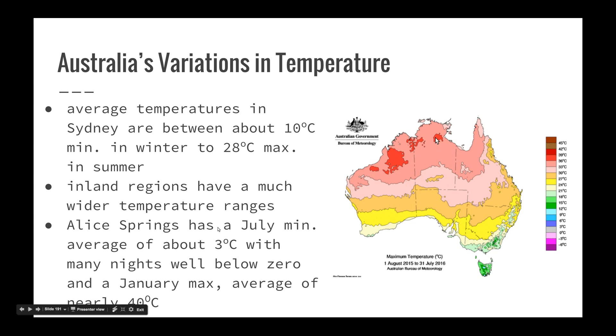In particular, Alice Springs and those desert areas can drop well below zero at night and have highs in the 40 degrees Celsius range, demonstrating that some areas within Australia have extreme temperature variations.